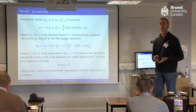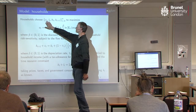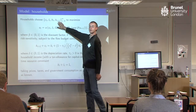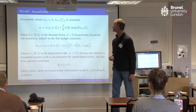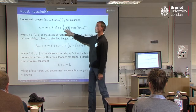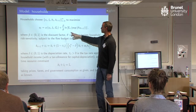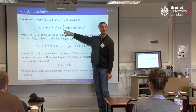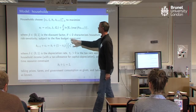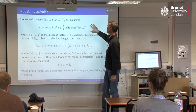Here's what the household's problem looks like. The household has a choice about how much consumption, how much leisure and how much labour to provide, and how much capital to take into the next period. So it's going to be choosing this sequence to maximise its discounted lifetime utility. Now this looks pretty standard — the only thing that's different is the presence of this parameter theta, which is the risk sensitivity parameter. Theta is a value that's going to be negative, and it characterises the household's aversion to risk.